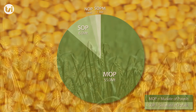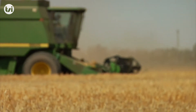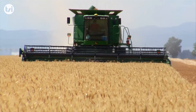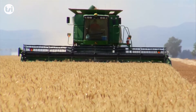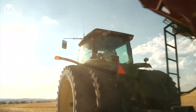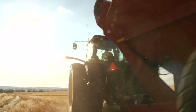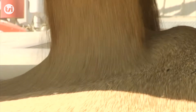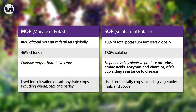MOP is the most common form of potash and accounts for around 85% of global demand. It is a potassium chloride compound and is mainly used on crops such as wheats and other grains. Whereas SOP is a compound of potash sulphate and is the premium form of potash.